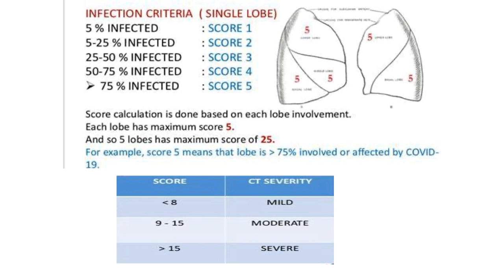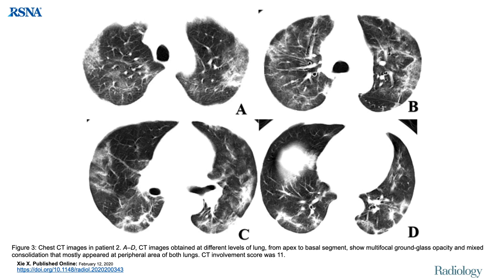Coming to severity scoring — this is based on the number of lobes involved using the European system: 5 points for each lobe, 3 for the right and 2 for the left. If 5% of a lobe is infected, the score is 1; as the percentage of involvement increases, the score increases. The sum total of all lobe scores: less than 8 is mild, 9–15 is moderate, and more than 15 is severe.